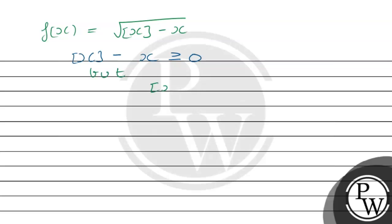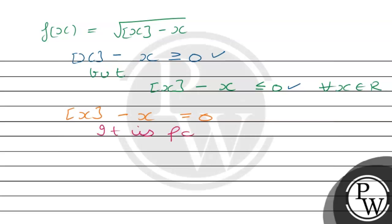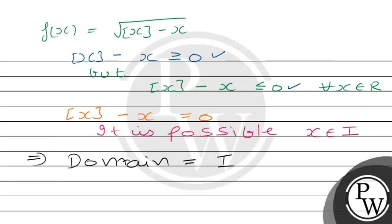We have to know that the greatest integer function of x minus x is equal to 0 for all x belonging to integers. This implies that the domain is equal to I, meaning the set of integers.